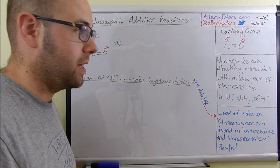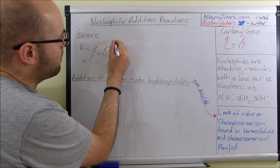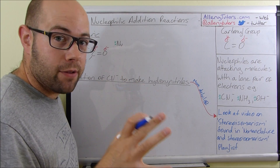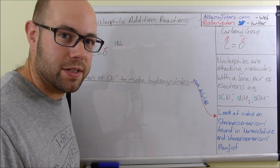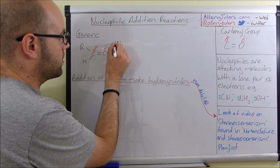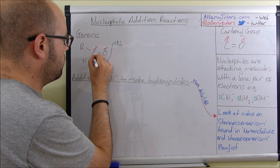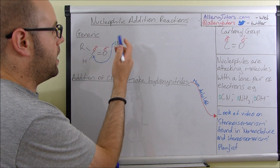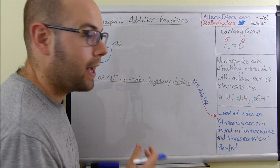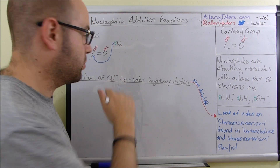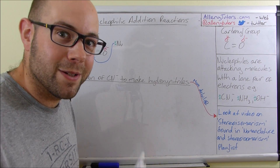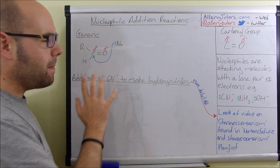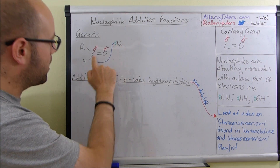We're going to draw the mechanism — I'll draw the arrows in blue to make it really clear. The lone pair will always attack a delta positive carbon. In mechanisms, the curly arrows always go from an area of high electron density — where the electrons are coming from — to where they're going to. This arrow comes from the lone pair to the carbon. You must draw these precisely: it must start from the lone pair and go to the carbon, nowhere else.